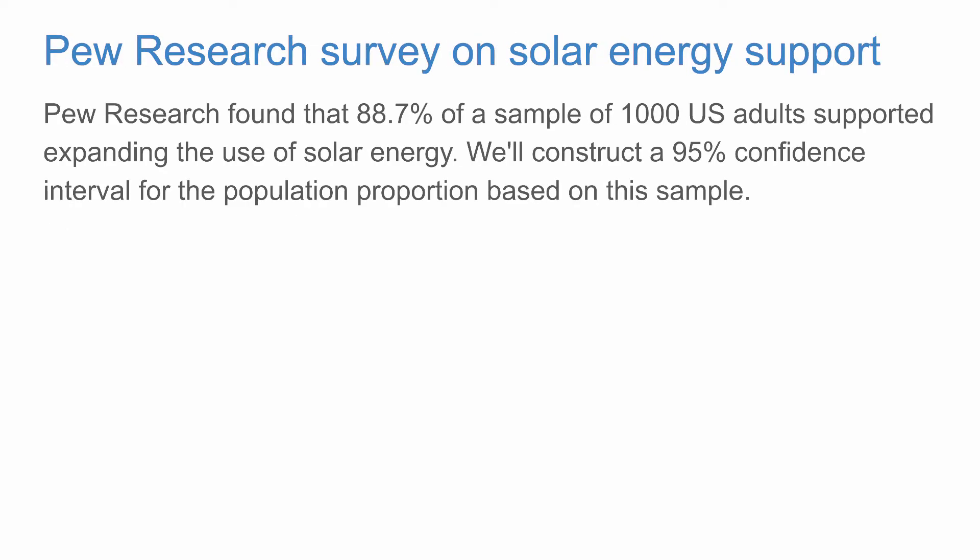Let's consider an example. Pew Research found that 88.7% of a sample of 1,000 U.S. adults supported expanding the use of solar energy. We'll construct a 95% confidence interval for the population proportion based on this sample.